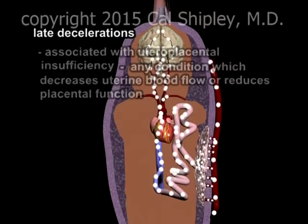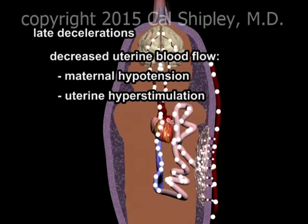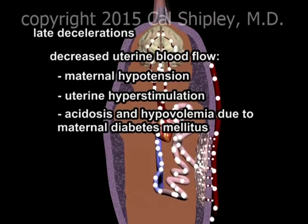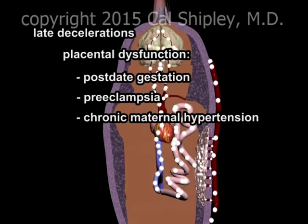Conditions which can give rise to decreases in uterine blood flow include abnormally low maternal blood pressure, also known as hypotension, uterine hyperstimulation — most commonly seen with induction of labor — and the acidosis and decreased blood volume, also known as hypovolemia, which may occur in mothers with poorly controlled diabetes mellitus. Causes of decreased placental function include post-date gestation, preeclampsia, chronic maternal hypertension, and maternal diabetes.